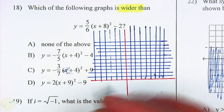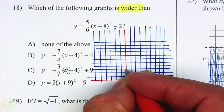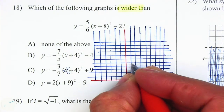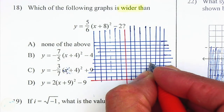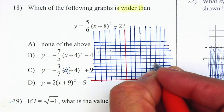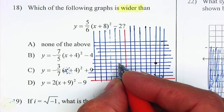Remember, it's rise over run. So I'm going to go up 1, 2, 3, 4, 5 and right 1, 2, 3, 4, 5. And I'm going to do it on the opposite side as well.